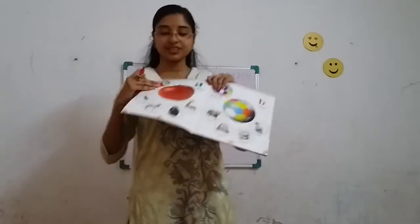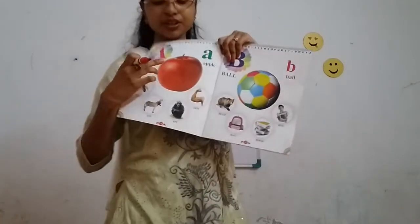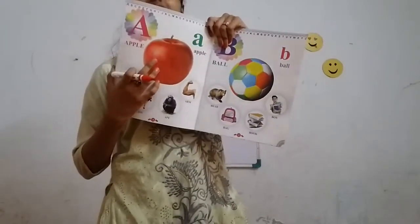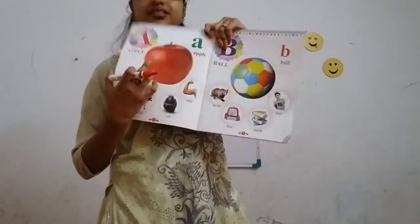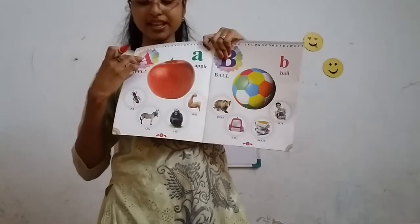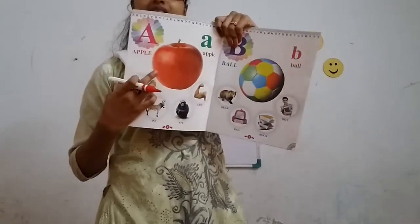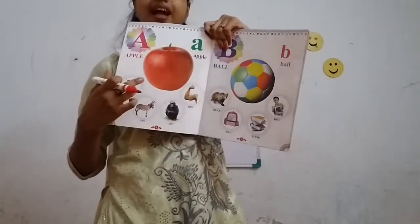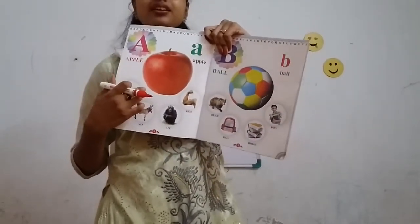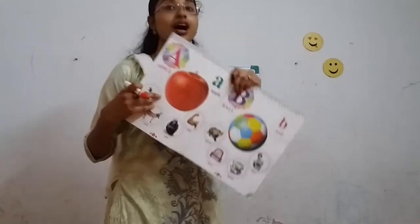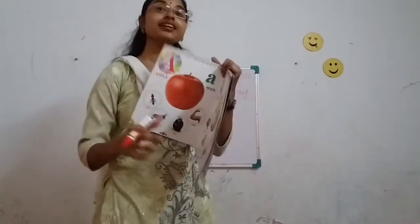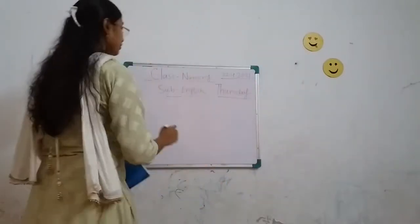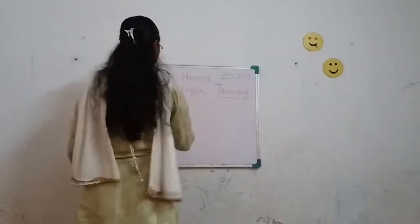So, children, look here. This is apple. This is A. A for apple. Okay. A for apple. How to write it? Children, how to write it?